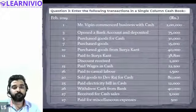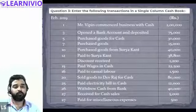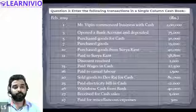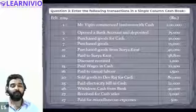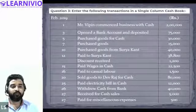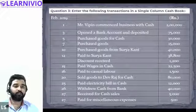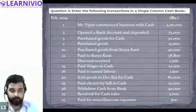Opening a bank account and depositing 75,000 — this will go on the credit side. We write 'By Bank Account' because cash is being deposited into the bank, so cash reduces. We are making the single column cash book, so we won't record the bank side — we are only concerned with the cash effect. Bank gets affected but we are not recording that here.